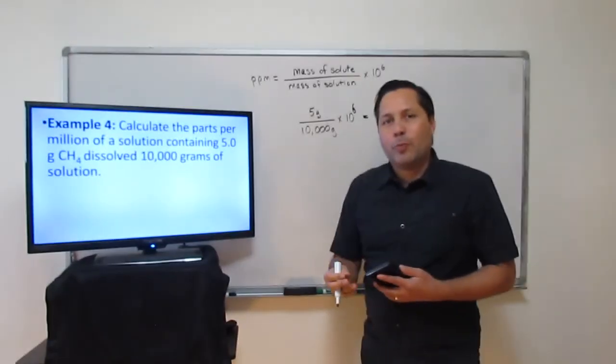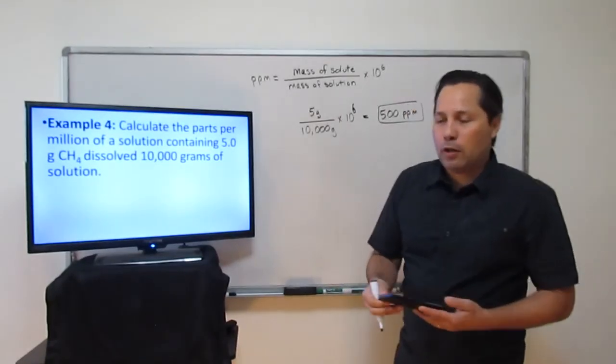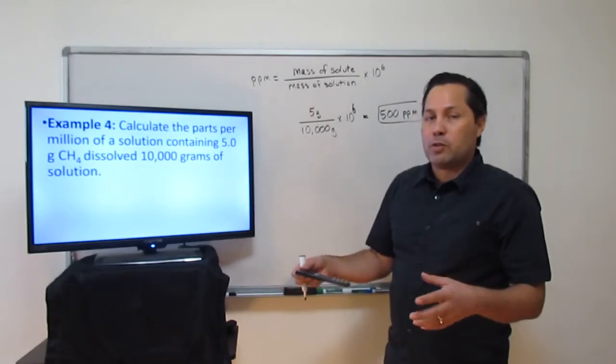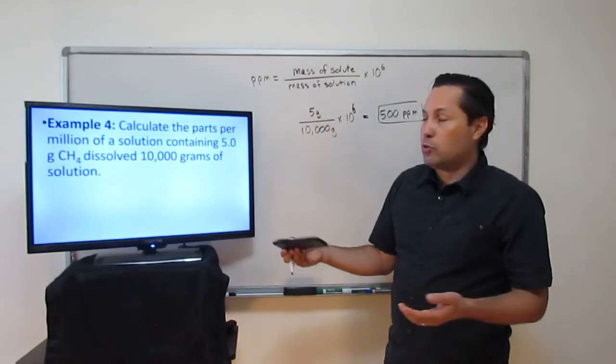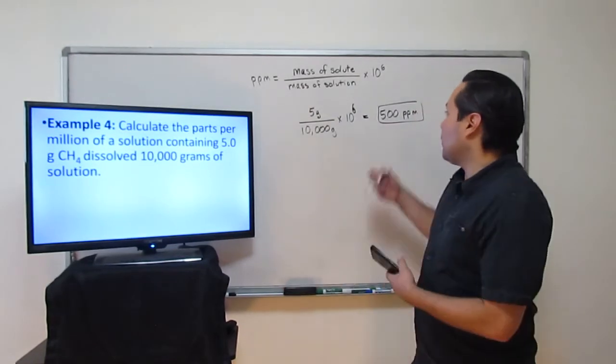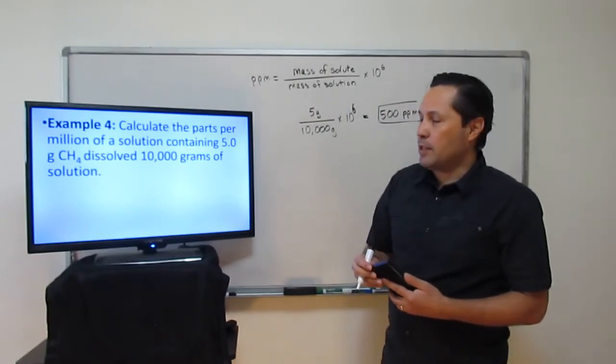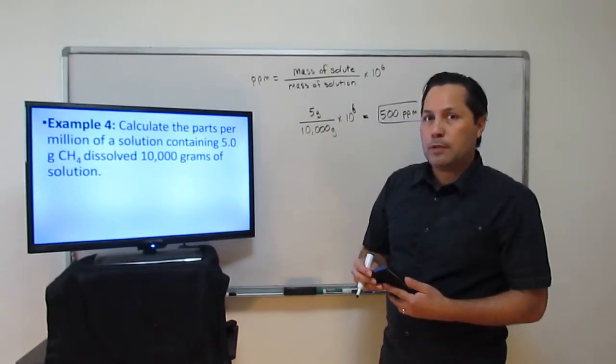How do you interpret that answer? Well, if you had a million parts — a million molecules of water — 500 of them would belong to the methane. That is example 4.